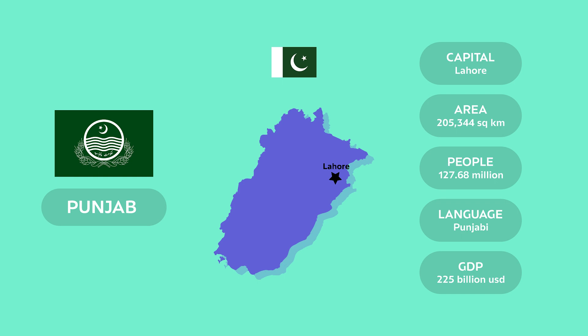People speak Punjabi in Punjab. Punjab is the richest province of Pakistan with an estimated GDP of $225 billion USD.